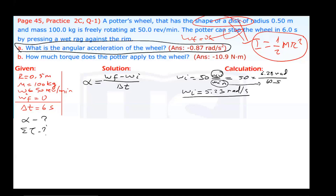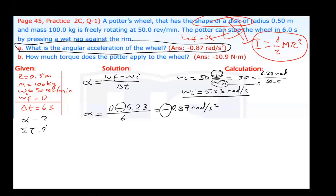Now I've converted revolutions per minute to radians per second. I can calculate alpha, the angular acceleration. Final angular speed is zero because it stops at the end of 6 seconds. Initial angular speed is 5.23 radians per second. Time interval is 6 seconds. Dividing gives negative 0.87 radians per second squared. The negative indicates slowing down — to stop the wheel, you must slow down, which is why angular acceleration is negative.